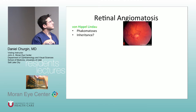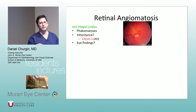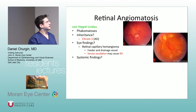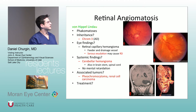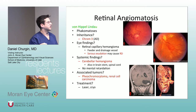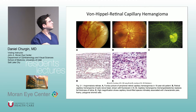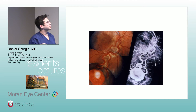Retinal angiomatosis is another name for Von Hippel-Lindau, chromosome 3, autosomal dominant. You can remember it — Von Hippel-Lindau has three words. Eye findings: retinal capillary hemangioma with a feeder and drainage vessel; they definitely can get serous exudations. They get cerebellar hemangiomas, also brainstem and spinal cord. They don't get mental retardation. They have association with pheochromocytoma and renal cell carcinoma — the most common cause of death is rupture of these hemangiomas and renal cell carcinoma. Treatment is with laser and cryo. Here are some path photos and clinical photos of the capillary hemangioma.